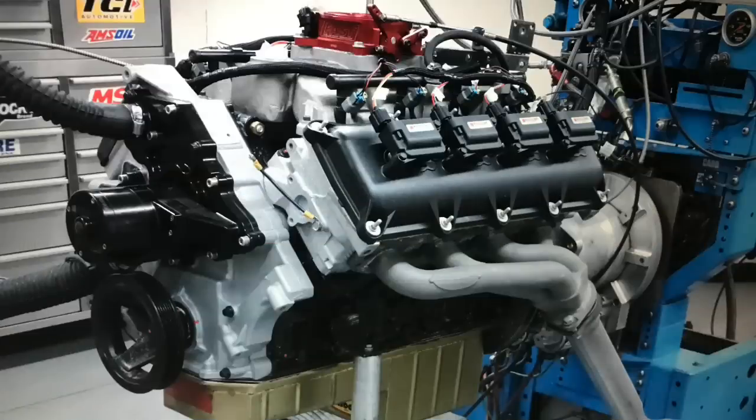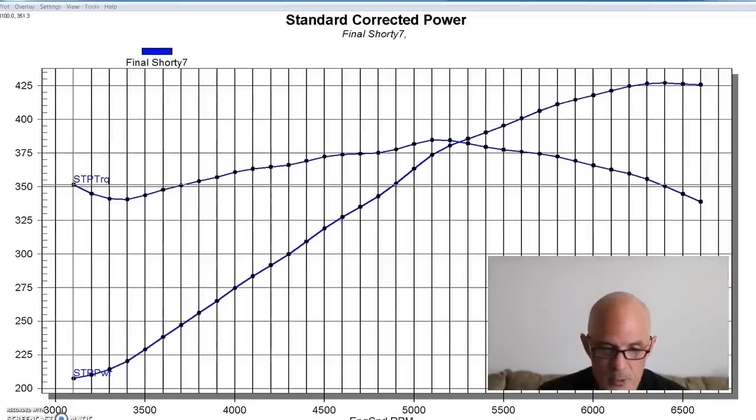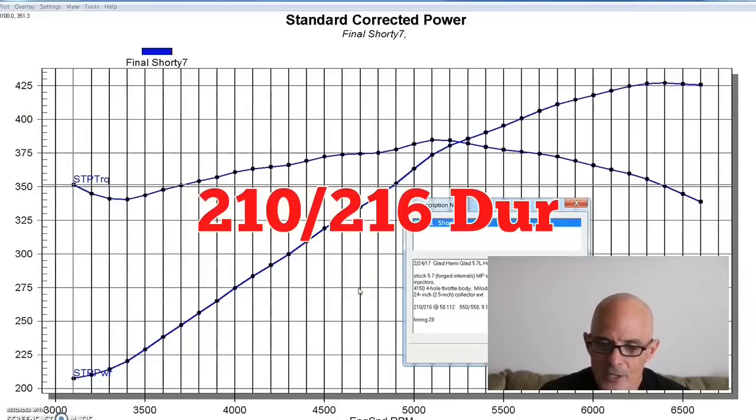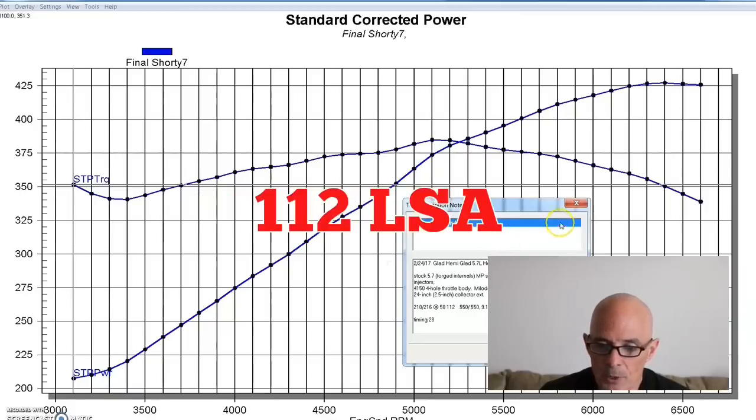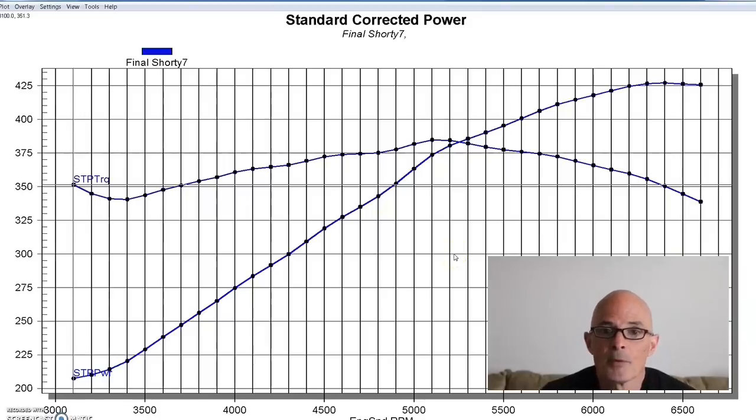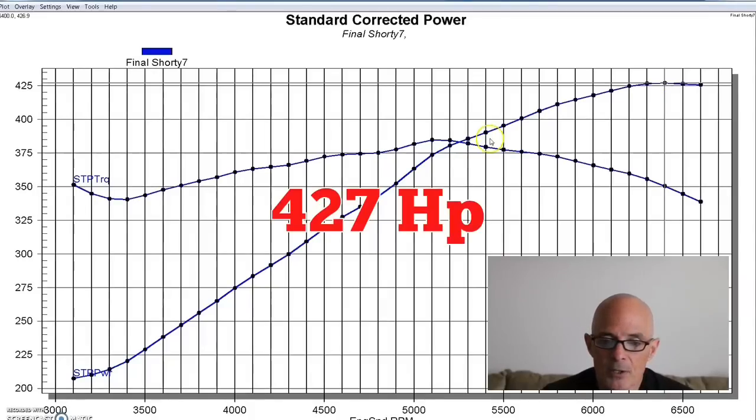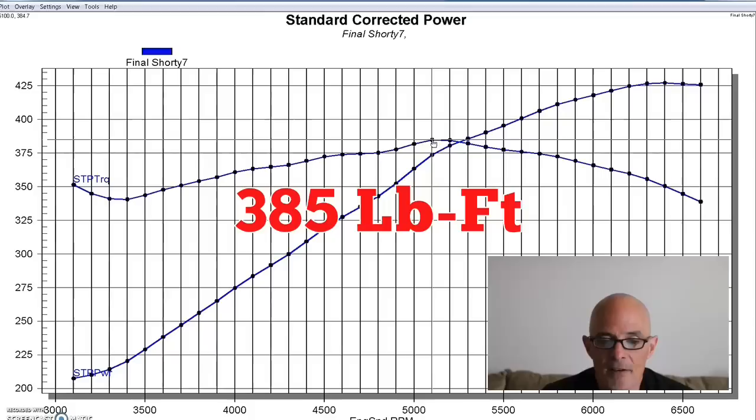To get things started with our tests we installed our 5.7 liter Gen 3 Hemi up on the dyno. Now this particular one was a basically stock Gen 3. It did have a mild cam in it. It was 550 lift and it was a 210 to 16 duration at 50 and 112 degree lobe separation angle. We first equipped this thing with the Mopar performance single plane intake and a 4150 throttle body. This thing had 36 pound injectors in it. We started this thing off with shorty headers, just two and a half inch exhaust extensions that we put on here. Equipped with the shorty headers our 5.7 liter Hemi produced 427 horsepower and 385 foot-pounds of torque.